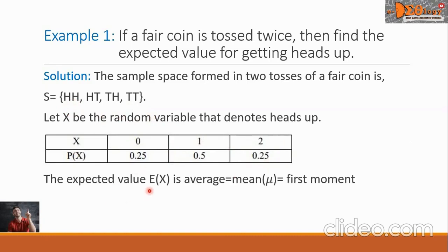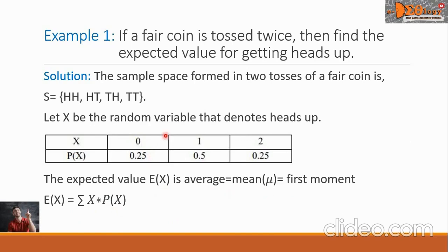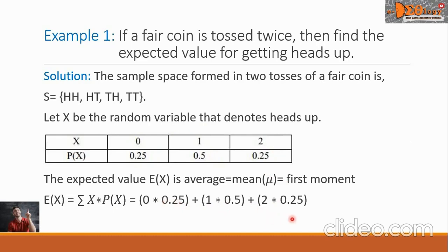The expected value E(X) is the average, also equal to the mean mu, sometimes called the first moment. Using the formula, we sum X times P(X): 0 × 0.25 + 1 × 0.5 + 2 × 0.25. Using our calculator, the final answer is 1.